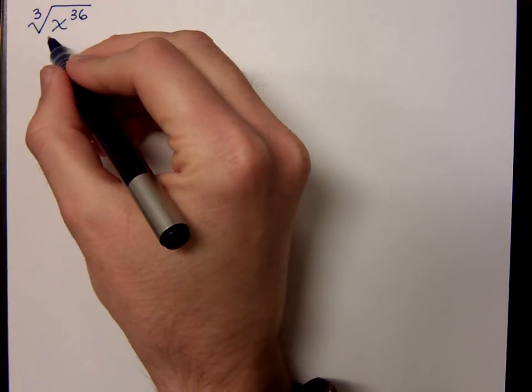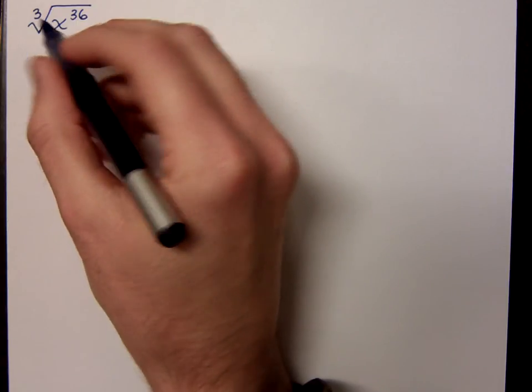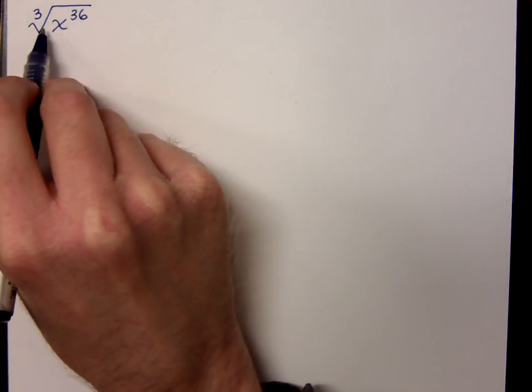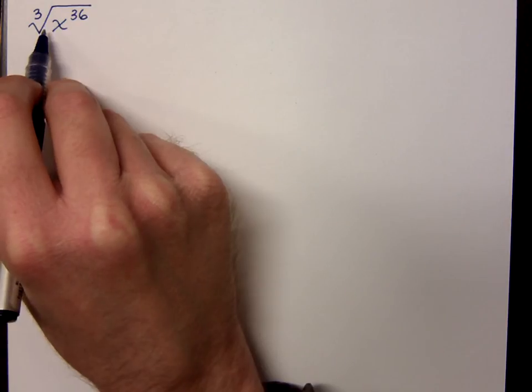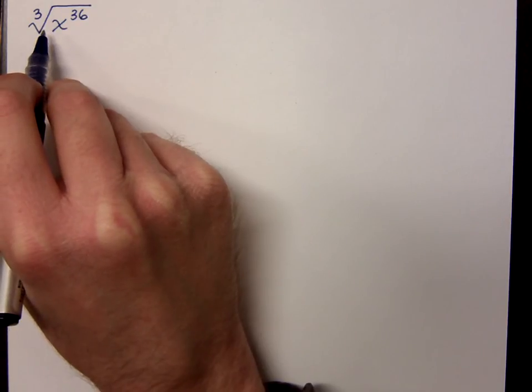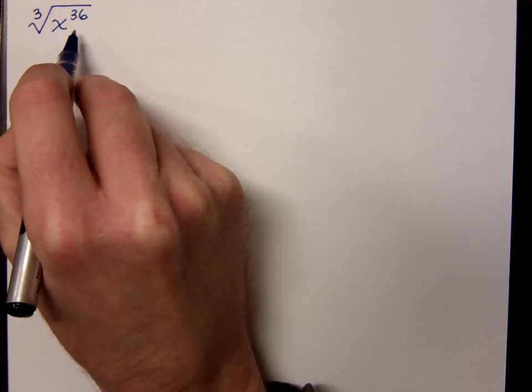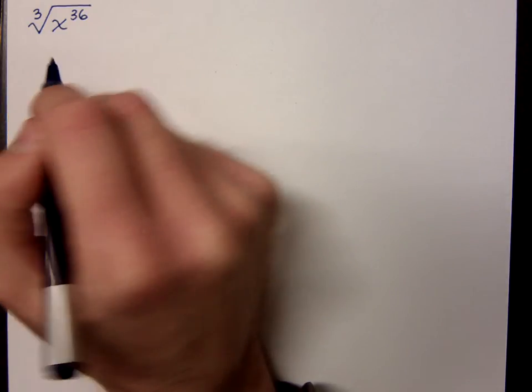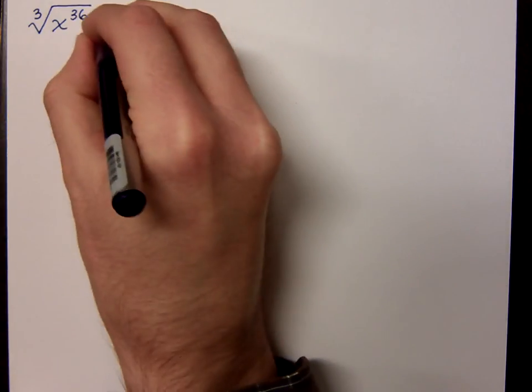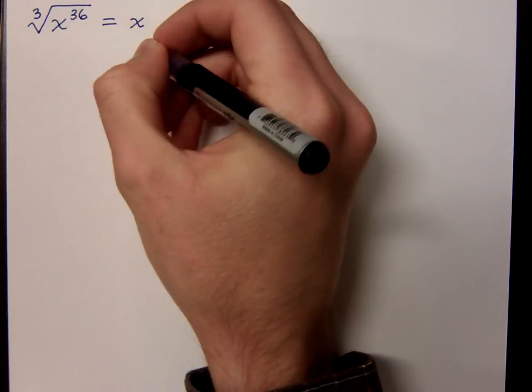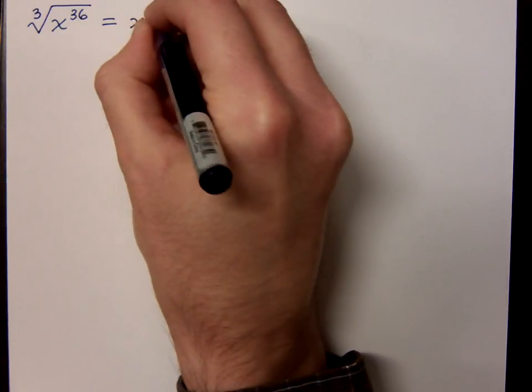So if I look at this guy and I have the cube root of x to the 36th, this should be pretty easy if you remember the trick that we did with radicals and you've got the exponents. What do we get here? I'll give you a hint. It's x to the 12th, right?